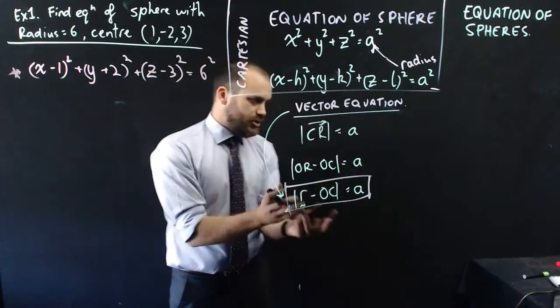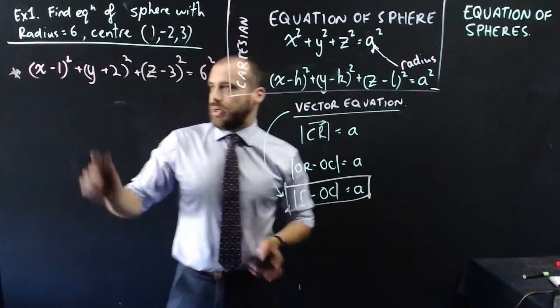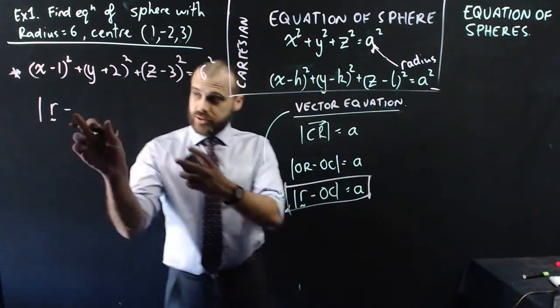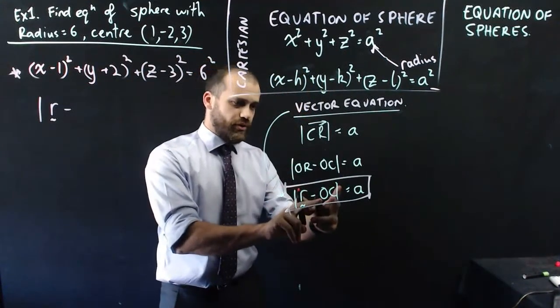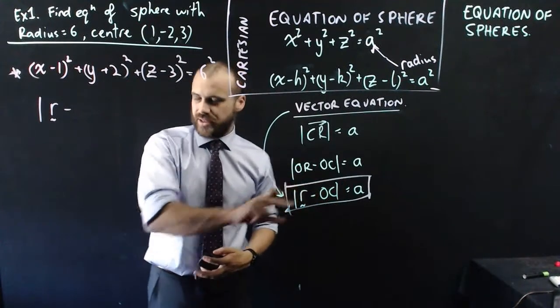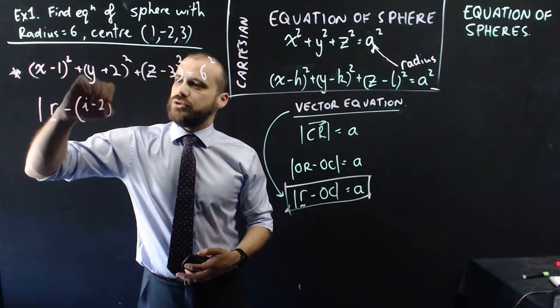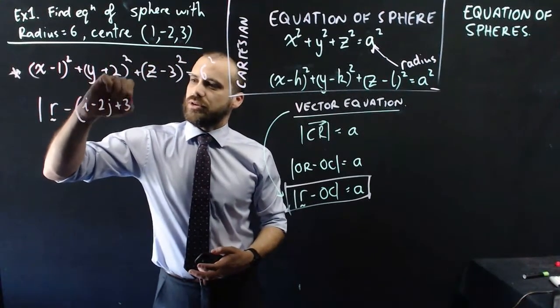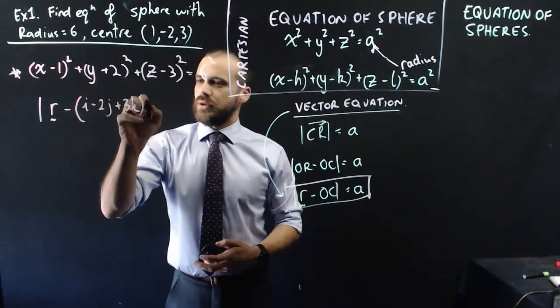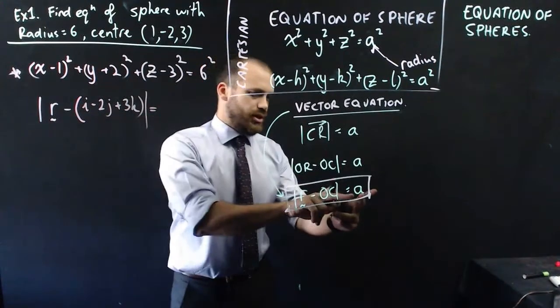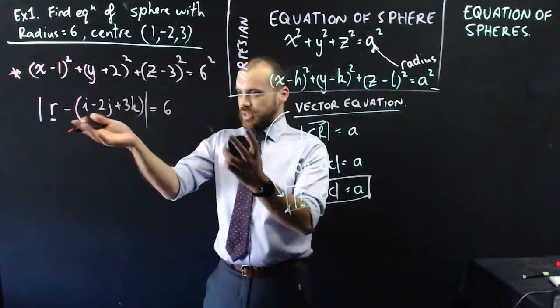What about the vector equation form? Well, it's pretty simple. It's the magnitude r minus all of this bit here, all of the position vector of the center. So it's minus i minus 2j plus 3k. The magnitude of equals to the radius, which is 6. And that's it.